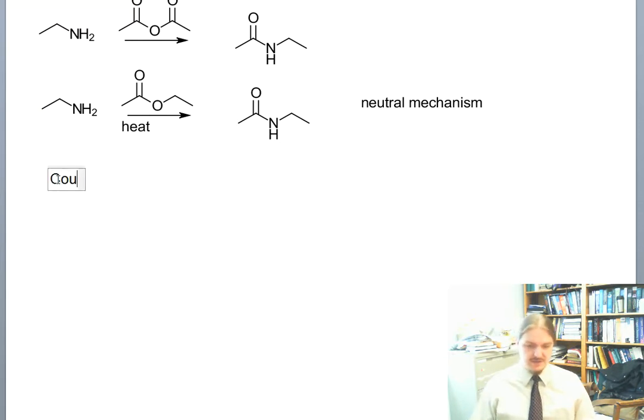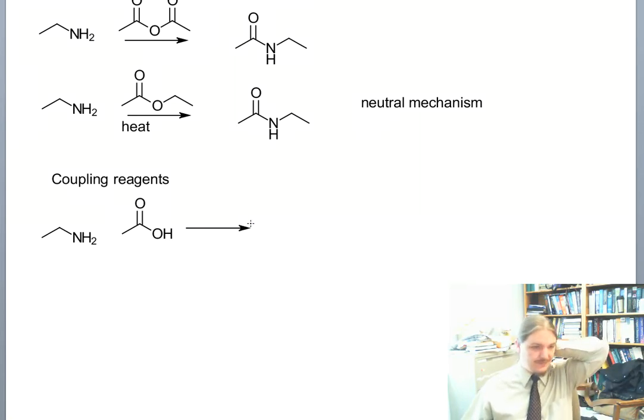Like the formation of esters, there are a whole host of coupling reagents that can be used to make amides. And generally, the idea is to avoid some of the harsher conditions and the more reactive intermediates and be able to react a carboxylic acid and an amine directly in the presence of some sort of activating agent. And there are a number of ways that that can be done.